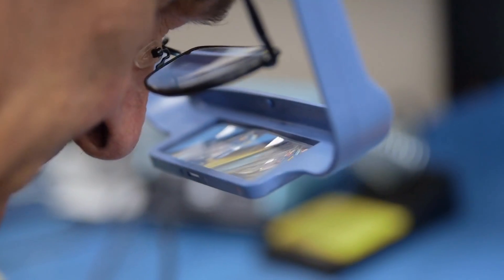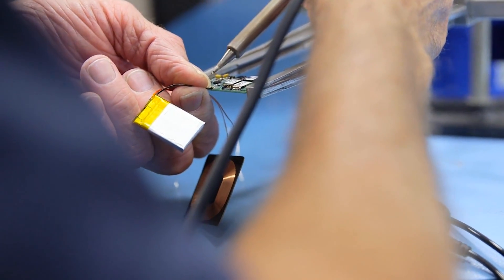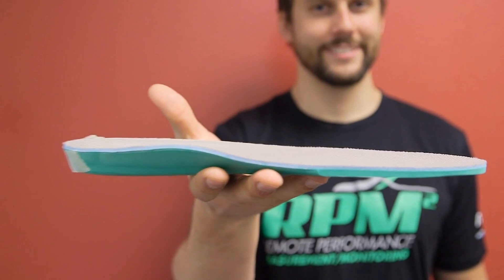We are now marketing a product called RPM Square, which is a pair of inserts that measures gait and athletic performance. It has a built-in power meter, and we work very closely with triathletes, Olympians, world champions in different sports.